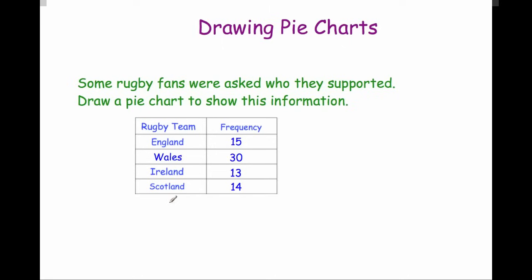The first thing I'd recommend is finding the total frequency, the total number of supporters or fans. First check the question to see if it's been mentioned. It doesn't actually tell us the total in the question, so we go to the table and add up the frequencies. 15 plus 30 plus 13 plus 14 gives us 72 supporters altogether.